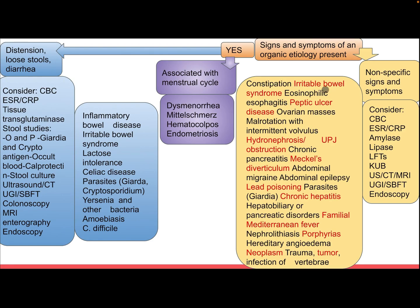Differential diagnosis for non-specific signs may include constipation, irritable bowel syndrome, eosinophilic esophagitis, peptic ulcer disease, ovarian mass, malrotation with intermittent volvulus, hydronephrosis, ureteropelvic junction obstruction, chronic pancreatitis, Meckel's diverticulum, abdominal migraine, abdominal epilepsy, lead poisoning, parasites including giardia, chronic hepatitis, hepatobiliary or pancreatic disorder, familial Mediterranean fever, nephrolithiasis, porphyria, hereditary angioedema, neoplasm, trauma, tumor, and infection of the vertebra.